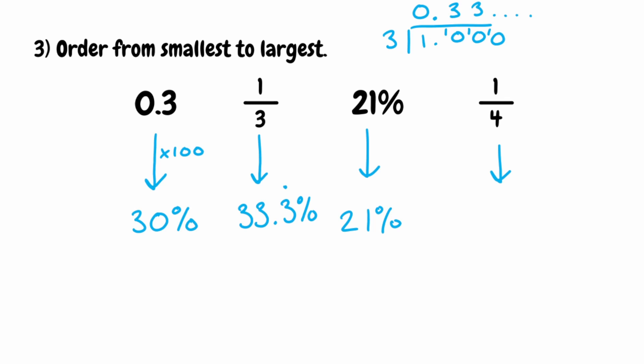And finally, a quarter as a percentage. This is a very common one — it's 25%. But we can figure it out by finding an equivalent fraction over 100: multiply the bottom by 25, do the same to the top, and that's where we get our 25%.